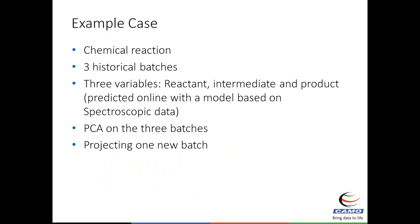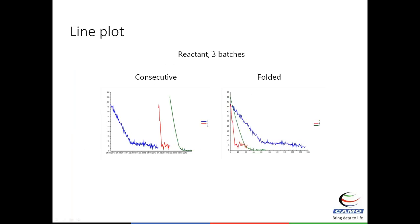Here is a chemical reaction case study with three historical batches and only three variables, predicted from spectroscopic data. Even when you can predict the variables, you still need the batch model to know when to stop — because byproducts form at the end of the reaction. We show one variable, the reactant, as both a consecutive line plot and a folded plot. It's difficult to see how to model this in time — the data looks very different across batches.